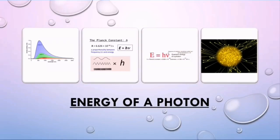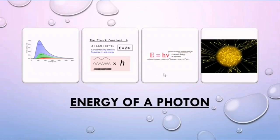Albert Einstein based his ideas on the work of German physicist Max Planck. Part of Planck's work in 1901 was about black body radiation. He suggested that electromagnetic energy comes only in lumps called quanta — plural of quantum — meaning energy is emitted in discrete form. He stated E equals h-nu, where h is Planck's constant (6.63 × 10⁻³⁴ joule-seconds), indicating that the energy of electromagnetic radiation is proportional to its frequency.